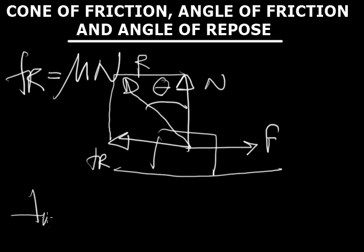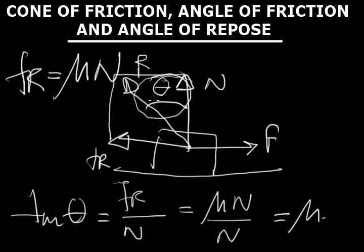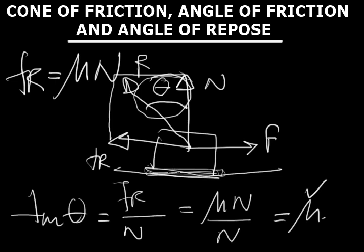If I want to measure the angle in terms of tan theta, then tan theta equals perpendicular over base, which is the friction force divided by the normal reaction. Since friction force equals mu times N, we get tan theta equals mu. The significance of this angle is that its tangent gives the coefficient of friction, which is otherwise very difficult to find directly since mu acts between the contact surfaces of the two bodies.